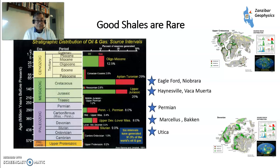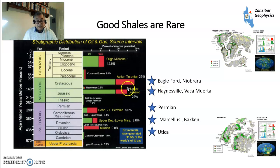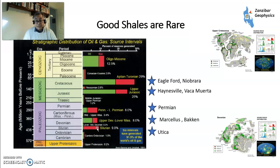Good shales are rare — very rare. This diagram shows the distribution of source rocks throughout the world across geological time. Key intervals include Oligo-Miocene; Aptian and Turonian, which includes Eagleford and Ibrara; Upper Jurassic, which includes Haynesville, many American and Argentine rocks, and the Bazhenov; Pennsylvania to Lower Permian, including the Permian Basin; Upper Devonian to Lower Mississippian — that's Marcellus and Bakken; and Silurian, for example the Tanezzuft in Algeria and Libya, which may be significant in the future. These maps were posted on LinkedIn by Eddie Ong, who kindly gave permission to feature them.